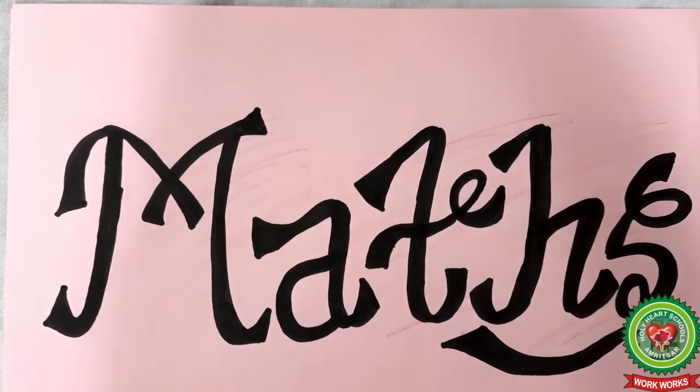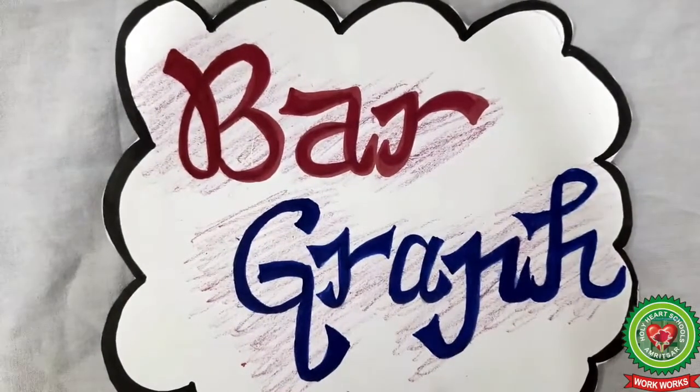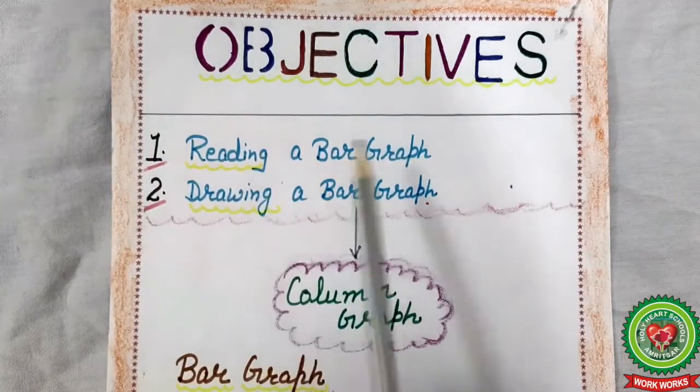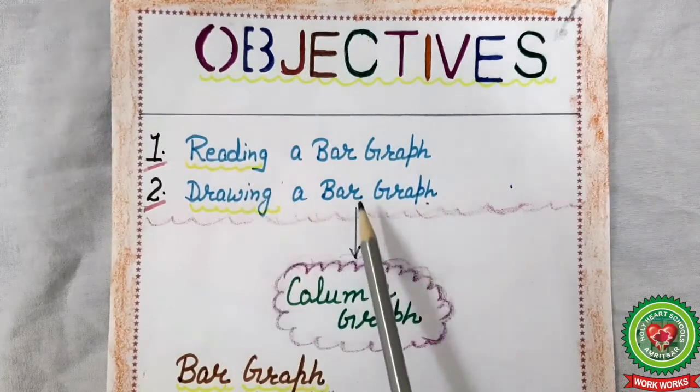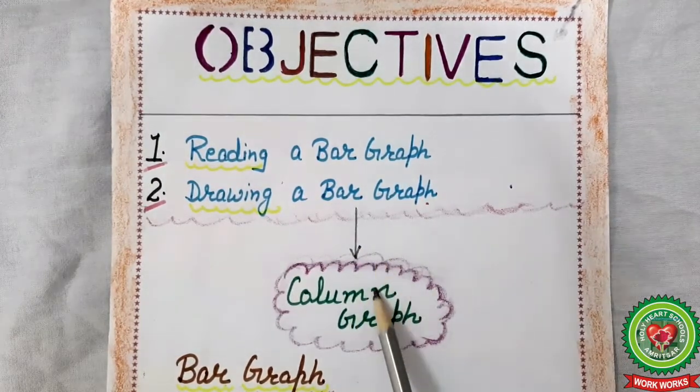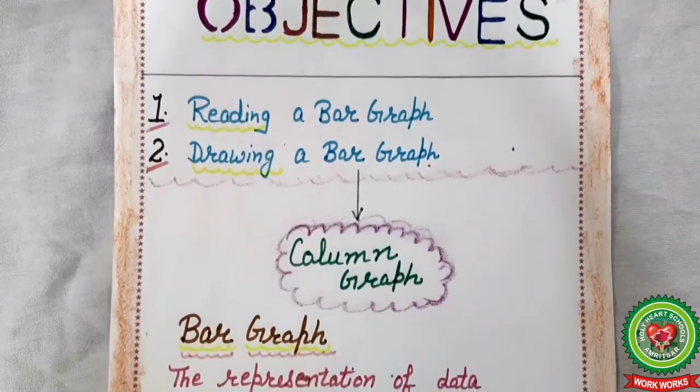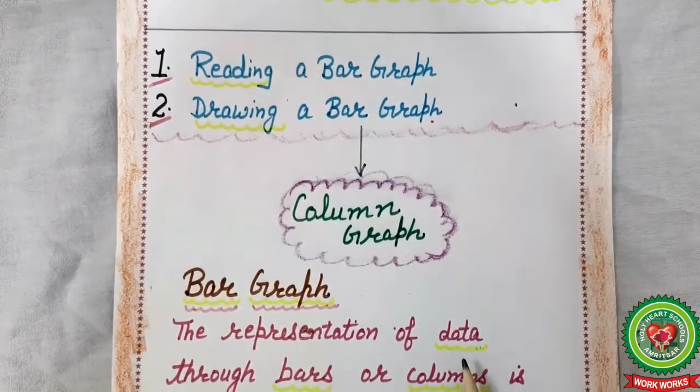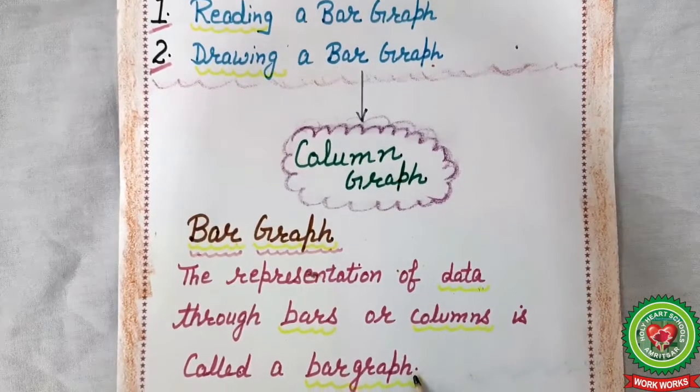Hello students, welcome to math class. Today we will start a new topic: bar graph. In bar graph we will learn reading a bar graph and drawing a bar graph. Bar graph is also known as column graph. What is bar graph? The representation of data, which means collection of information through bars or columns, is called bar graph.